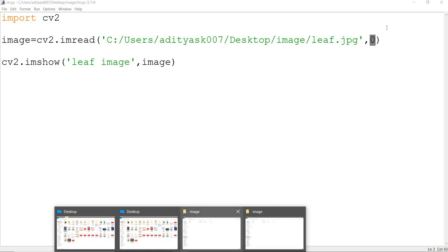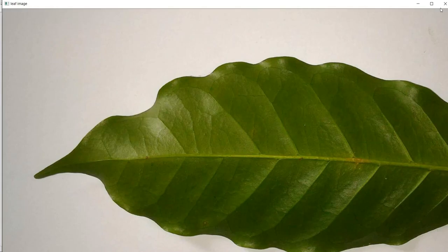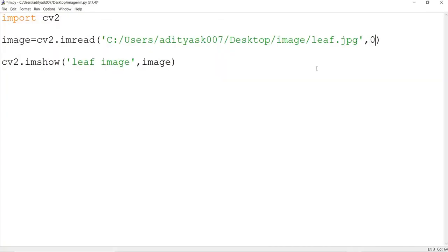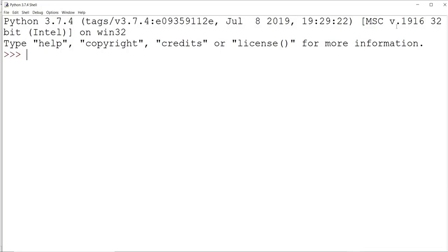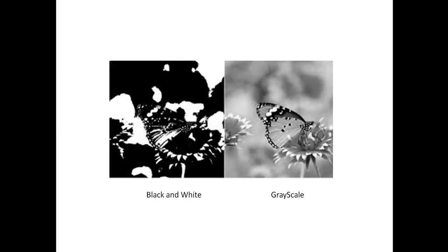In a grayscale image, you have the intensities of black and white and the gray levels in between — the whole information of the image is not lost. But in black and white, you just have black and white pixels with one threshold point: above the threshold everything is black, below it everything is white. In black and white images, a lot of information is lost, whereas in grayscale the information is retained but the color is lost — you don't have red, green, and blue coordinates, but all information in the image is retained.